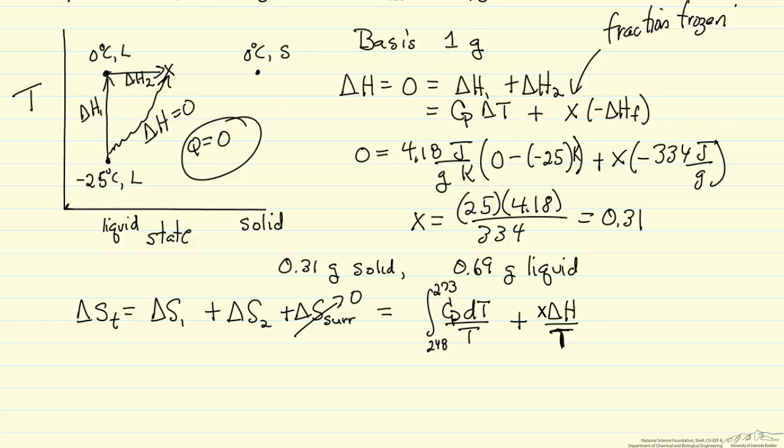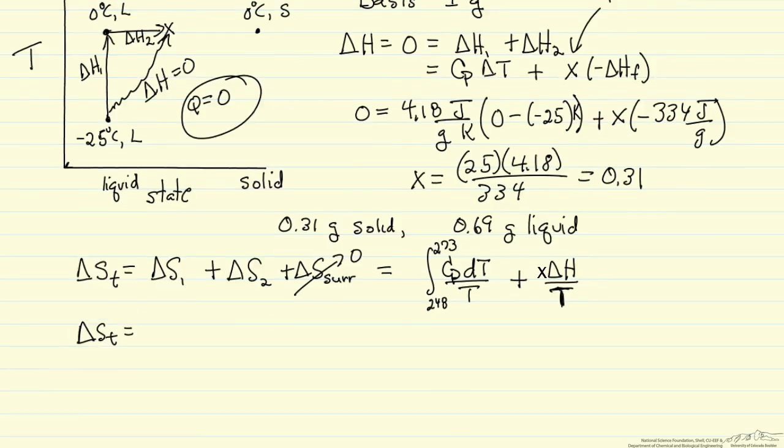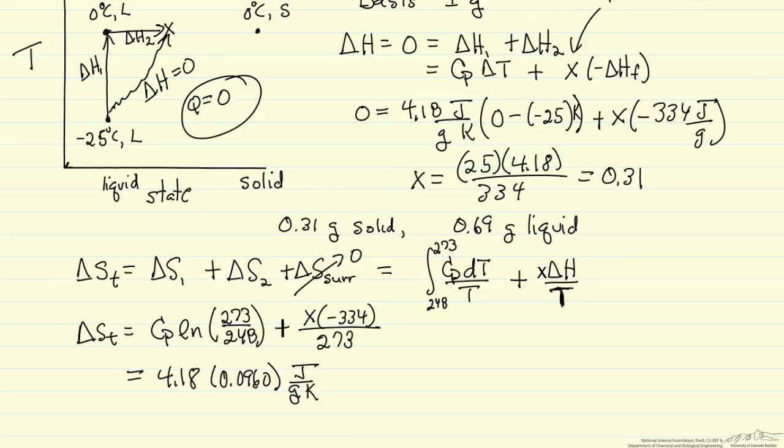And so we can calculate then by first integrating, so the total entropy change would be the heat capacity, the log of the final temperature, the initial temperature in Kelvin, delta H is x times minus 334, divided by the temperature, which is 273, so this is 4.18, and then x is 0.31, so I've substituted the numbers in,